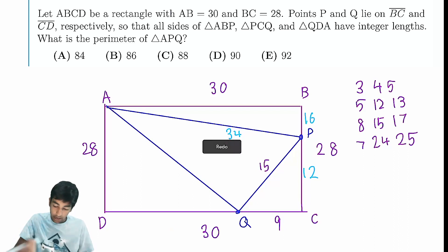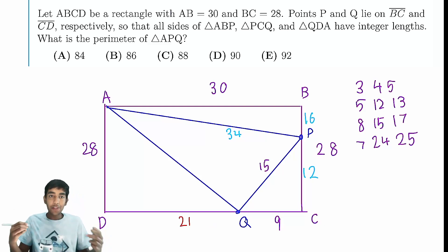So maybe let's try 9-12-15, the Pythagorean triple. That will make DQ 21. 21 and 28, aha! 3-4-5. So AQ is 35.